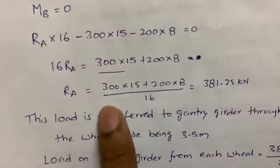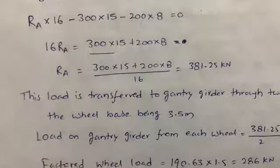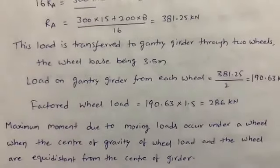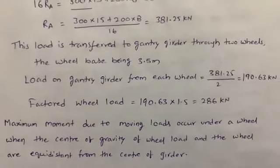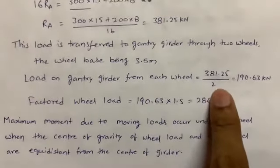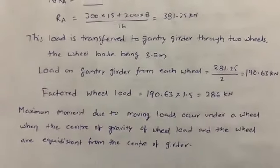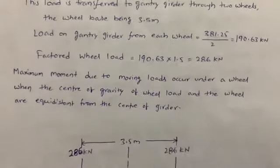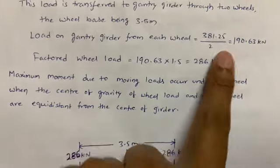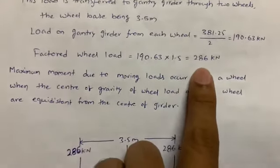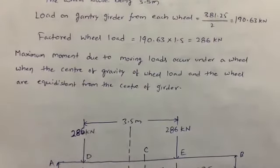From the moment equation, RA works out to 381.25 kN. Next, the load on the gantry girder from each wheel is 381.25 divided by 2, giving 190.63 kN. Applying the load factor of 1.5, the factored wheel load is 190.63 × 1.5 = 286 kN.